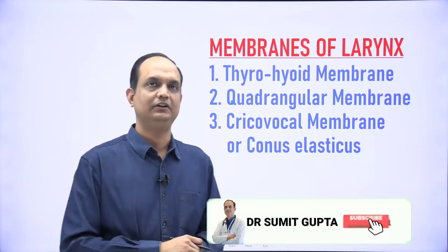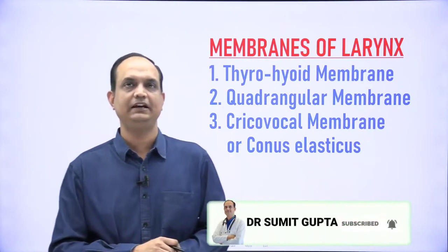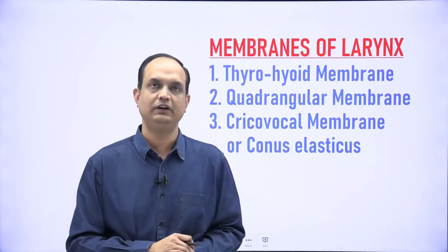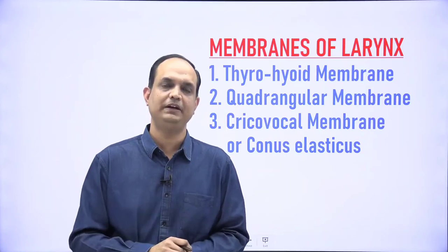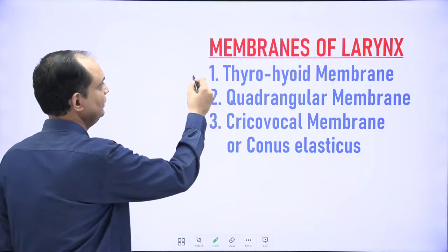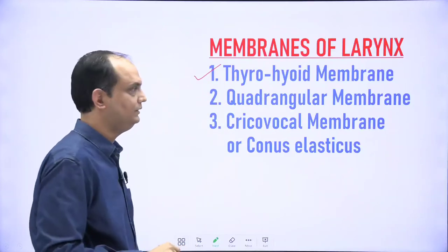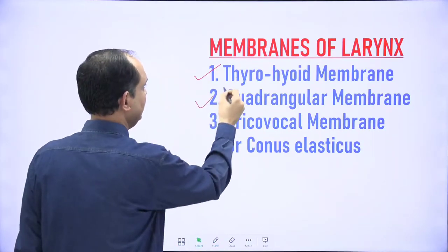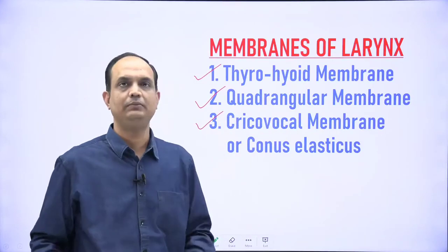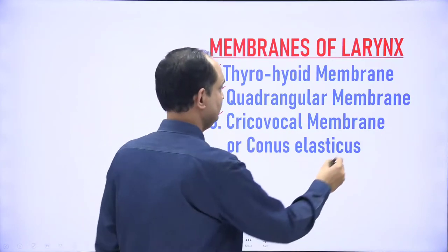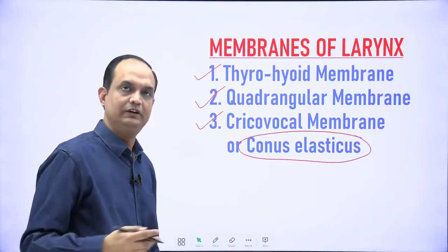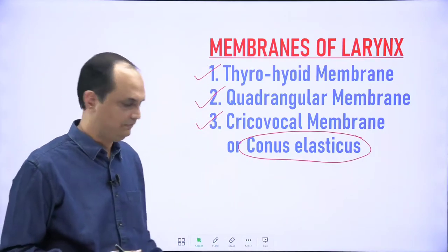Hello students, in the continuation of classes of the larynx, today we are going to discuss the membranes of larynx. There are three names you will come to know: one is the thyrohyoid membrane, second is the quadrangular membrane, and third is the cricovocal membrane, most commonly known as conus elasticus. We will discuss all three membranes one by one today.